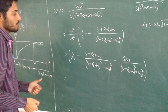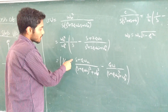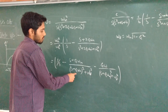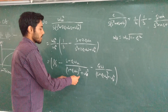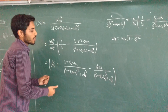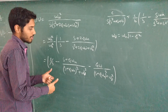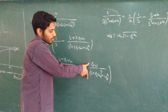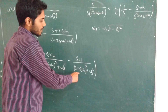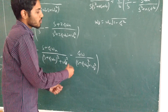Now if we see this term, this is nothing but s / (s² + ωd²), which is the Laplace transform of cos(ωd·t). And if we see this term, this is 1 / (s² + ωd²), which is the Laplace transform of sin(ωd·t).